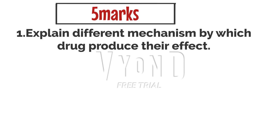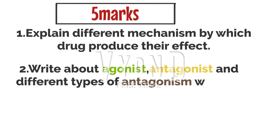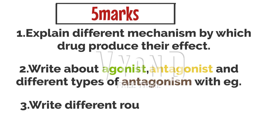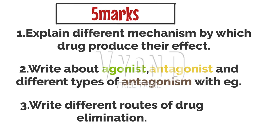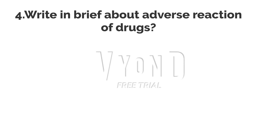Now the five-mark questions. First: explain the different mechanisms by which drugs produce their effects. Second: write about agonist, antagonist, and different types of antagonism with examples. Third: write about different routes of drug elimination — fecal matter, bile, pigment, saliva, etc. Fourth: write in brief about adverse reactions of drugs.